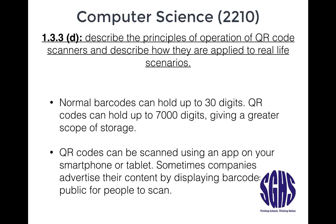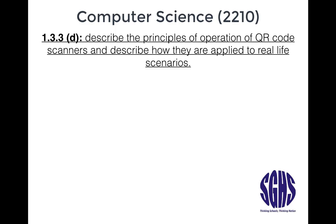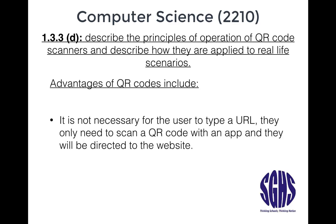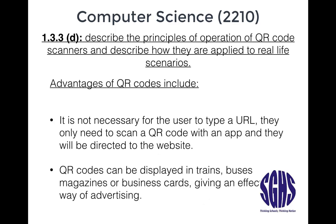Your phone can do it, which is quite a big advantage because most people carry phones with them in public. An advantage of QR codes is that it's not necessary for the user to type a URL — they only need to scan a QR code with an app and they will be directed to the website. Secondly, QR codes can be displayed pretty much anywhere in public: trains, buses, magazines, business cards, and this gives an effective way of advertising.